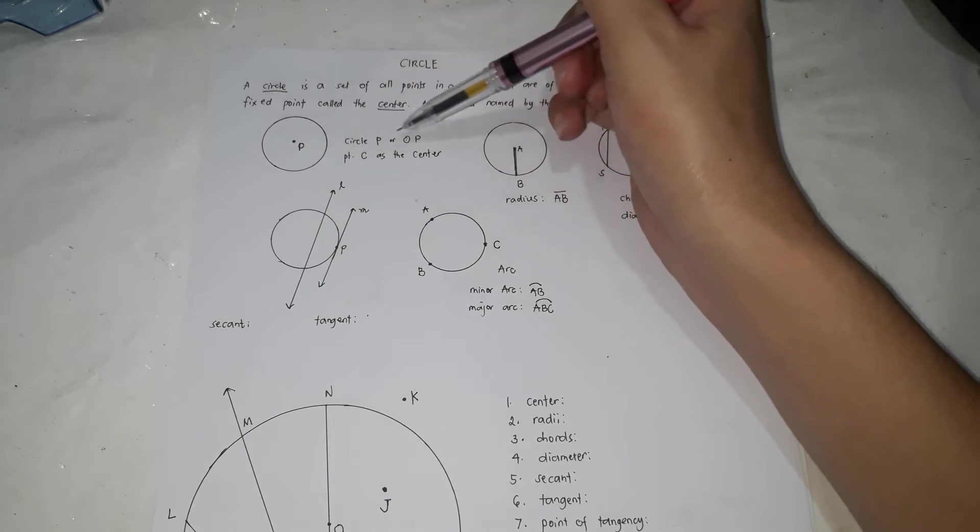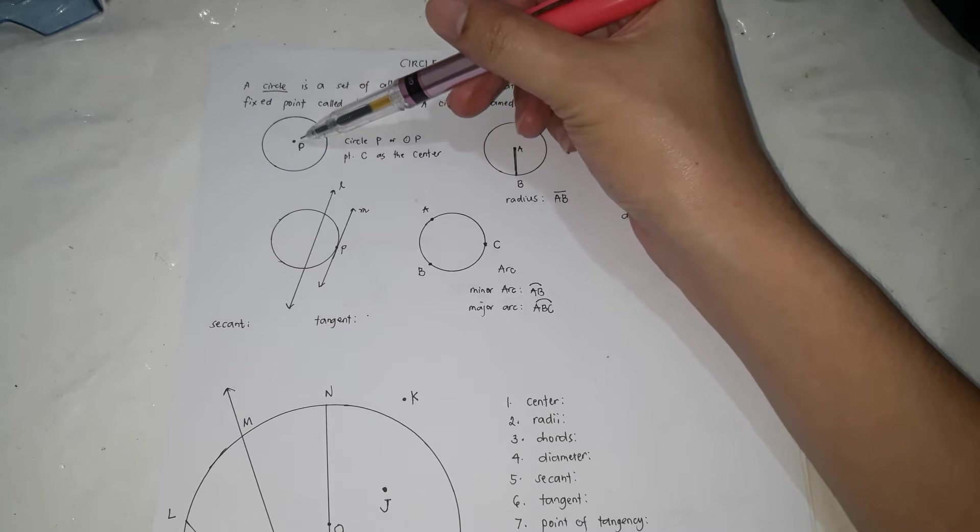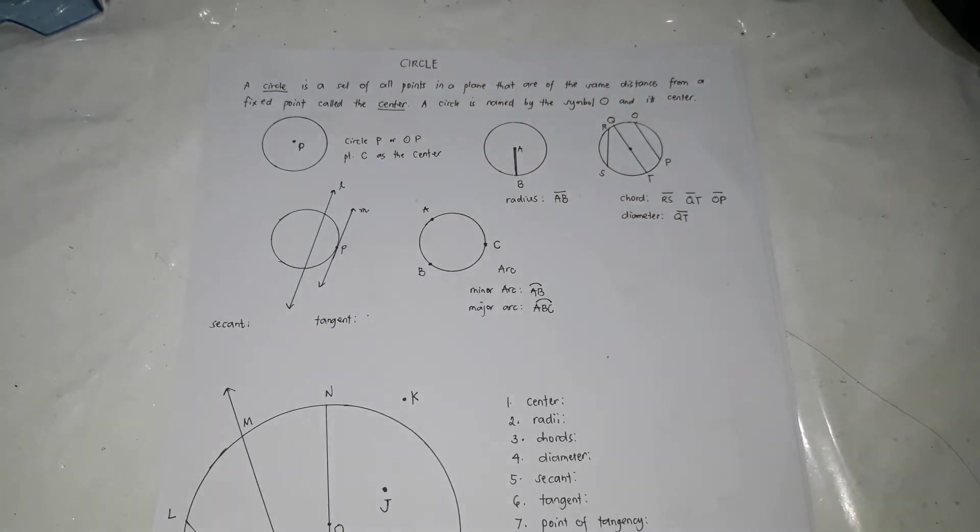Or this one, where point C is the center. This is the center, point C. So there are other parts of a circle that we need to know.